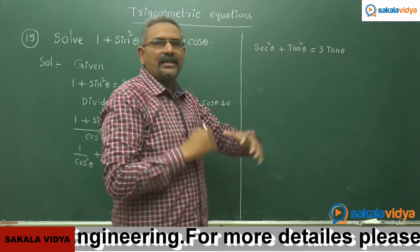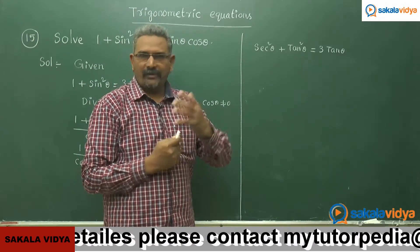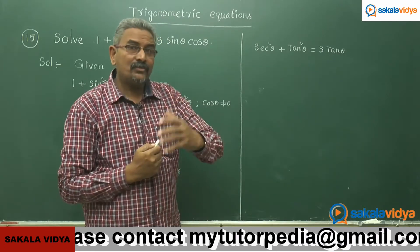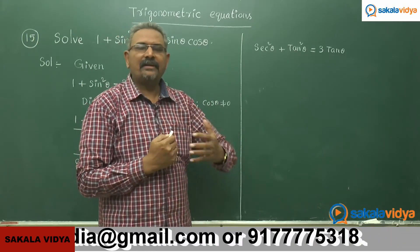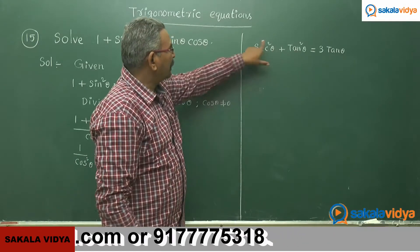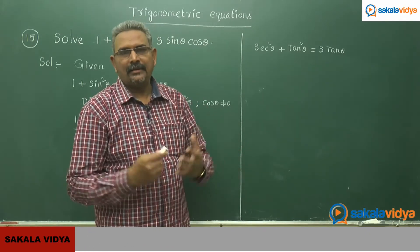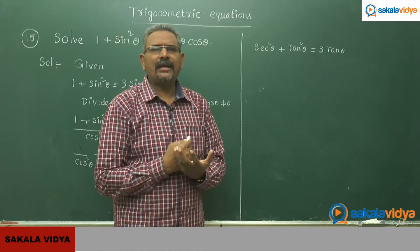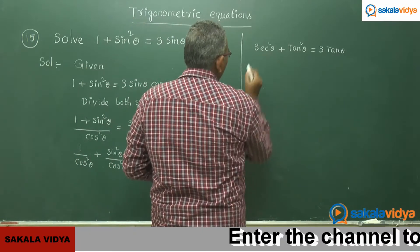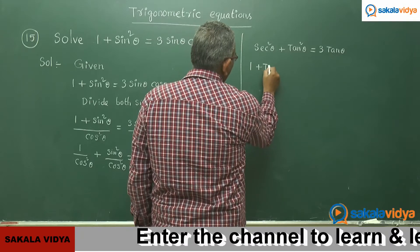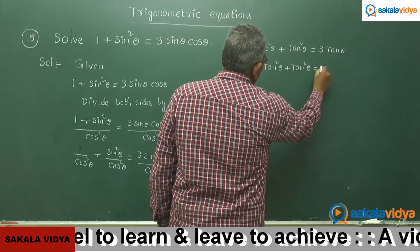It is not yet in the form of a quadratic equation in one variable, so we need to convert it. We express sec square theta in terms of tan theta using the formula sec square theta equals to 1 plus tan square theta. Substituting, we get: 1 plus tan square theta plus tan square theta equals to 3 tan theta, which gives 2 tan square theta minus 3 tan theta plus 1 equals to 0.